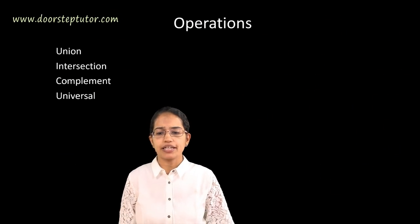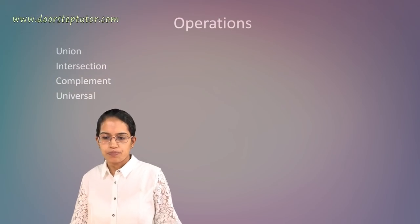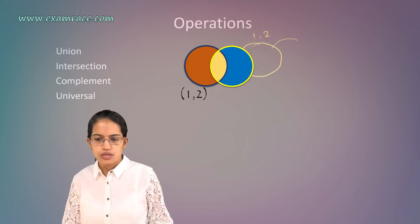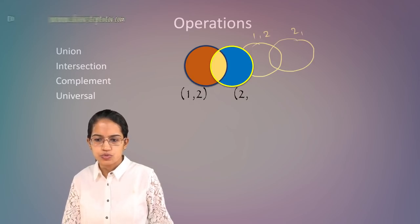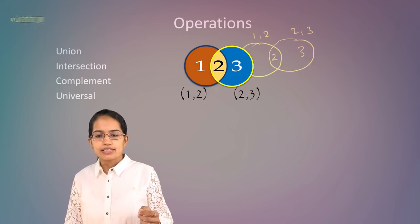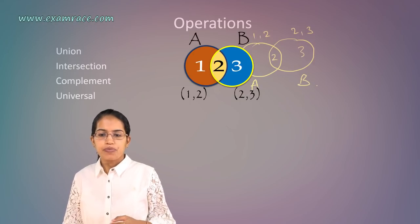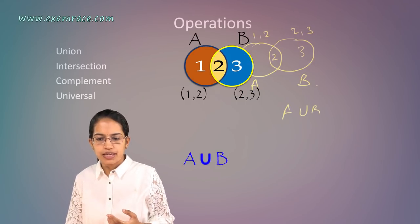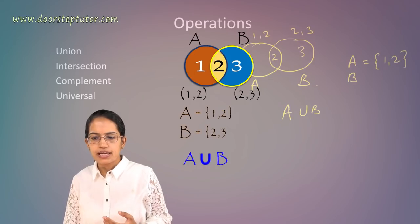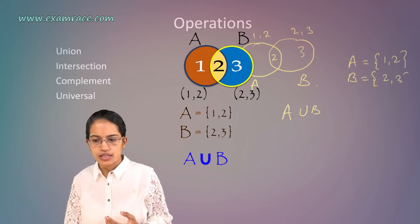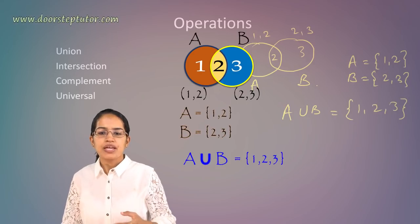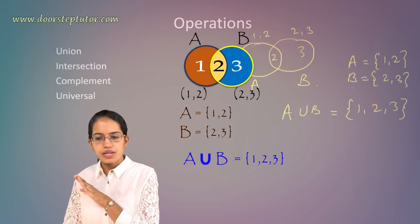When you have these kind of set, you have certain operations that come into play. This is a set that has 1 and 2. This is another set that has 2 and 3. I can write 1 here, 3 here and 2 here. What is this is A and this is B. A union is A union B where A is 1, 2, B is 2, 3. A union B would be 1, 2 and 3. That's everything which is within A and B.